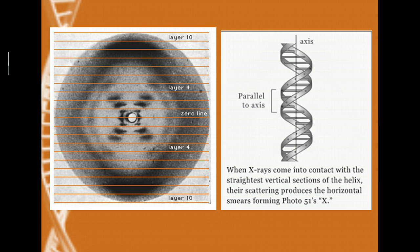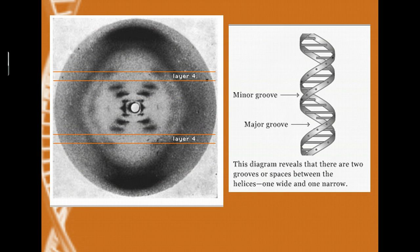When we look at the spaces on that X — the various spaces that exist — that indicates we might actually have a double helix. Because we have small spaces in some places and then large spaces near the ends of the X, that tells us it's a consistent helix that has both major grooves and minor grooves.